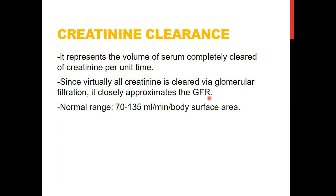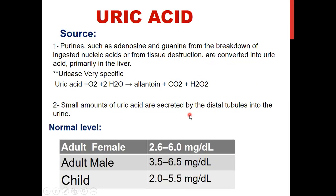The normal range of the glomerular filtration rate is 70–135 mL per minute per body surface area. Uric acid is the end product of purine catabolism. Purines — adenine and guanine — are broken down from ingested nucleic acids in the diet or from tissue destruction. These purines are degraded and converted to uric acid in the liver. Normal serum uric acid in adult females is 2.6–6 mg/dL, and in males 3.5–6.5 mg/dL.